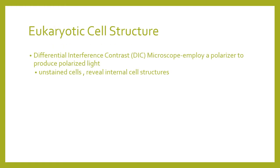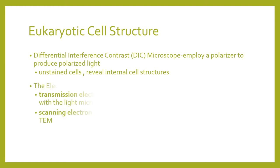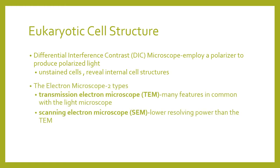The next type of microscope is your DIC or differential interference contrast microscope, which employs a polarizer to produce polarized light. It is used to visualize unstained cells and reveal their internal structures.